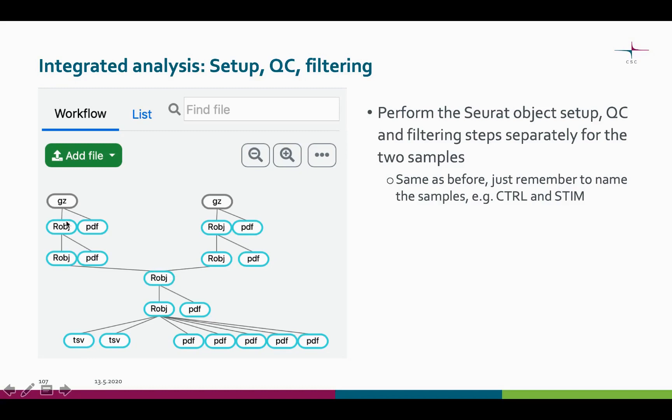Before combining the samples, we have separate R objects for each sample. From here on, we only have one R object with all the data in it.